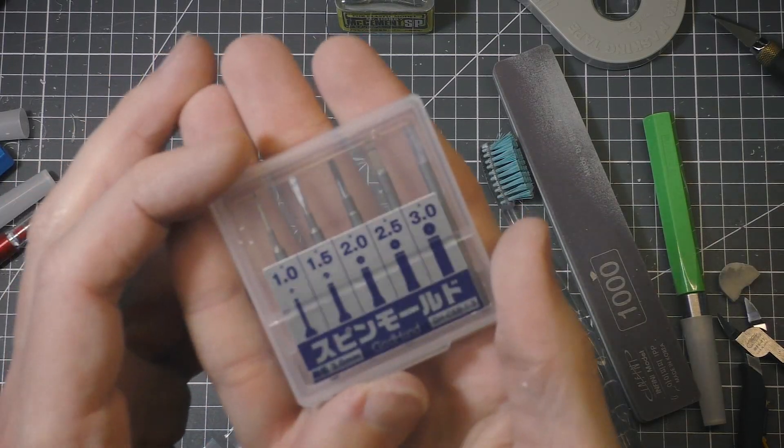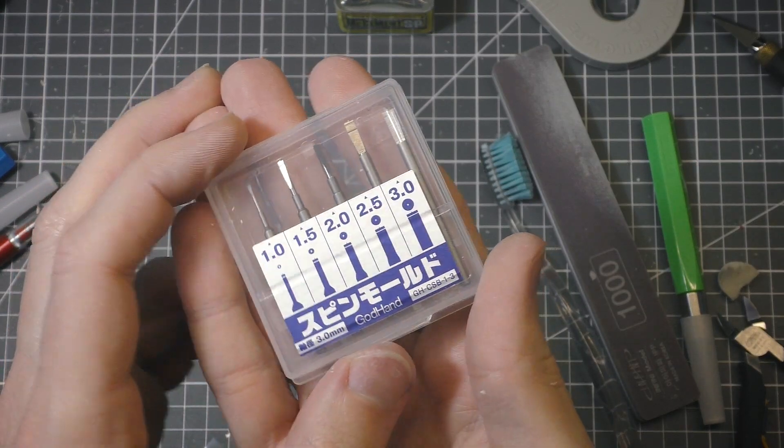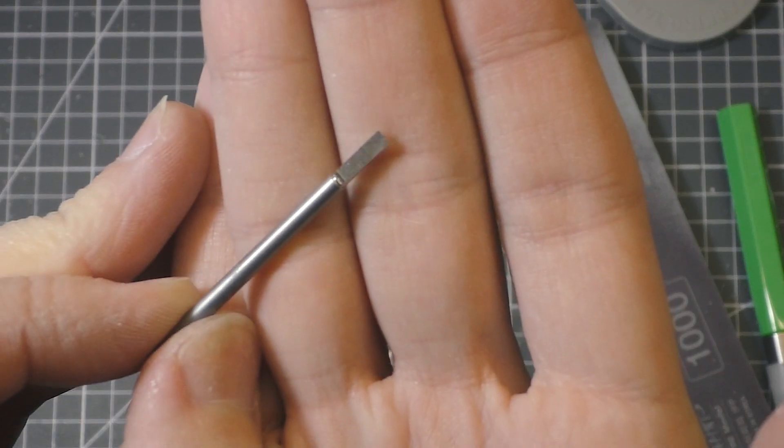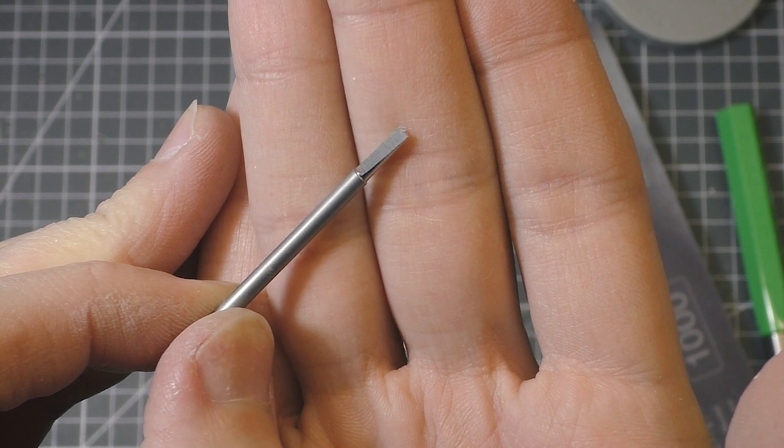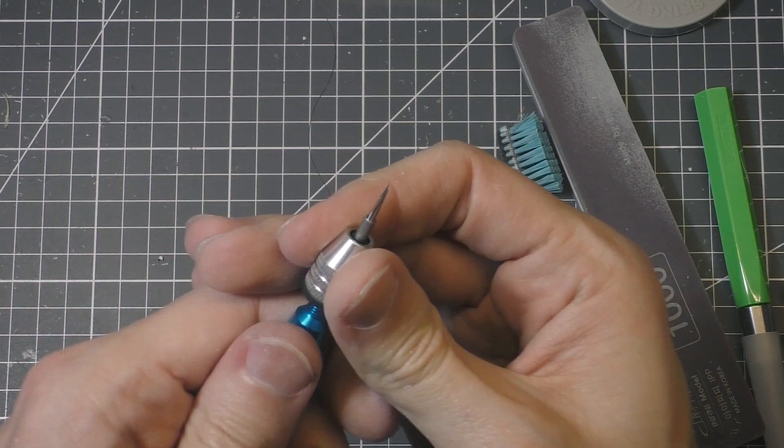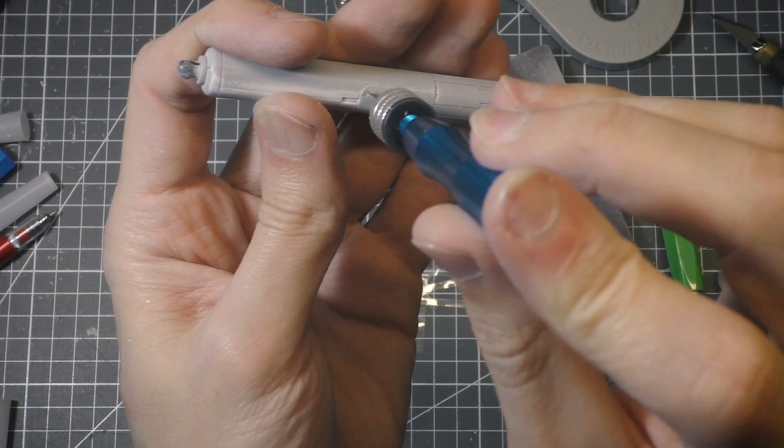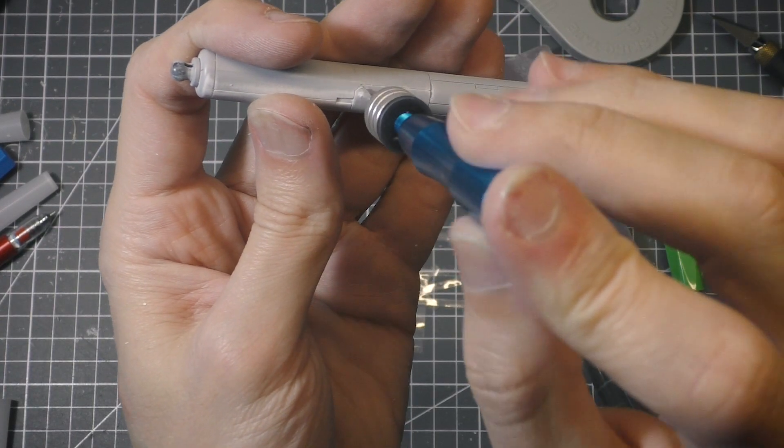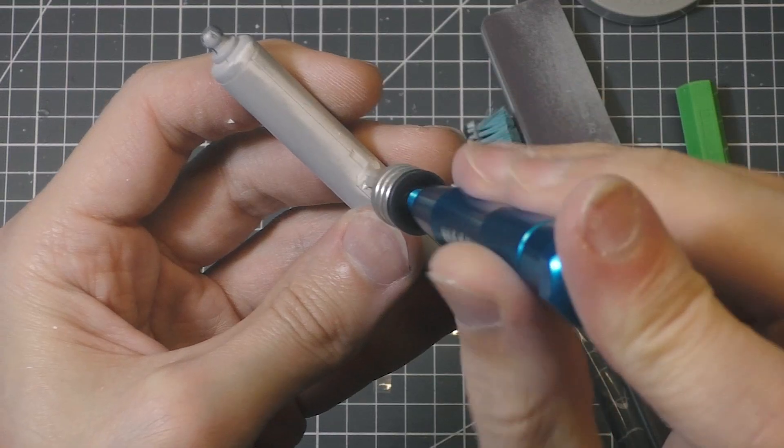I want to add some details over the corners, so I'm using this Spin Mold toolset from GotHand. Each bit has center pin, which allows you to set the tool properly with no problem. And you don't even need a drill, just a handle. Use a tool right on the piece.